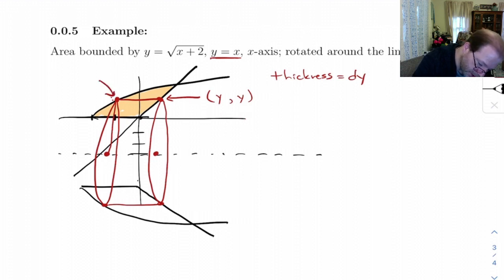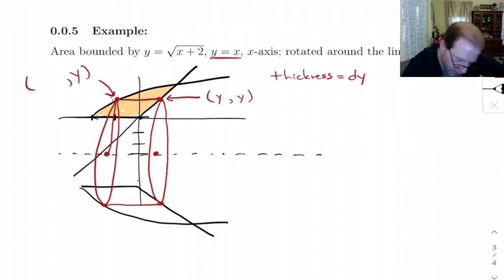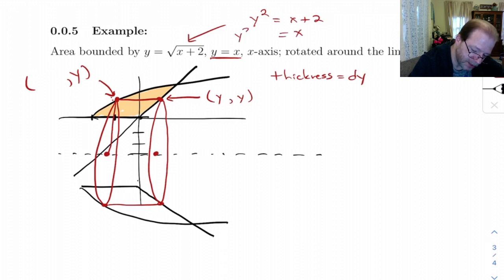This point over here, its y-coordinate is y. Well, what's its x-coordinate? Well, it's on this parabola, so we need to solve this out for x. You get y-squared equals x plus 2, so x is y-squared minus 2.